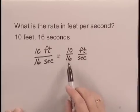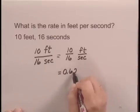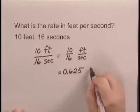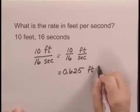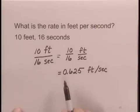10 over 16 in decimal notation is 0.625, and typically we write feet per second in horizontal form. So the rate in feet per second would be 0.625 feet per second.